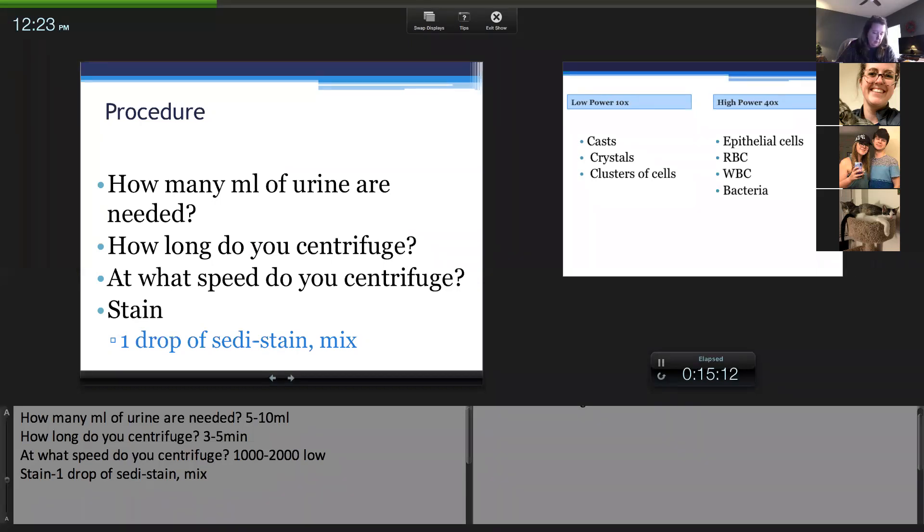Urine collected by which method is best for microscopic examination? That again is going to be a cysto. Cystocentesis should be the cleanest. When you have free catch you tend to have more debris. If you do a catheter you tend to have more cells which may not be representative of cells that were in the bladder.